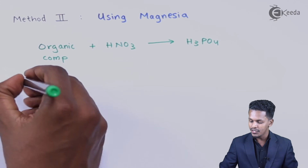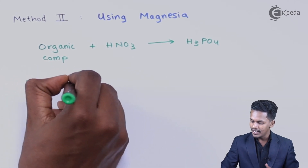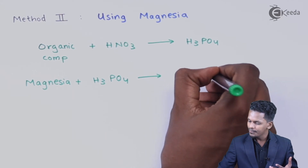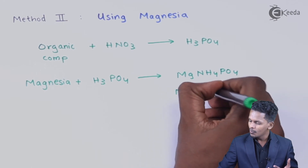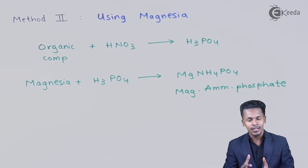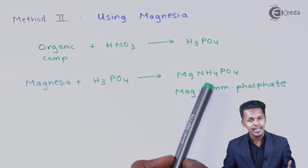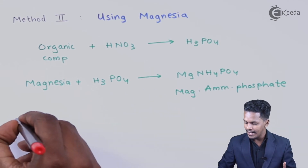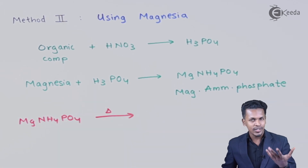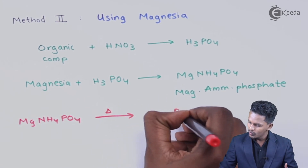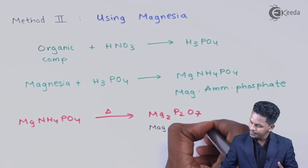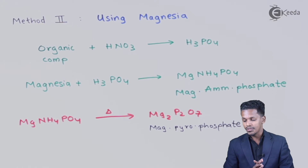In the solution of H3PO4, we add magnesia. When magnesia reacts with phosphoric acid, the product obtained is Mg(NH4)PO4, known as magnesium ammonium phosphate. The process doesn't stop here — we take this precipitate and ignite it. On igniting Mg(NH4)PO4, the product obtained is Mg2P2O7, which is known as magnesium pyrophosphate.